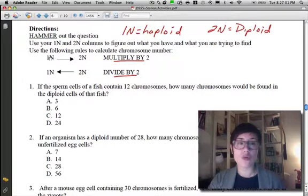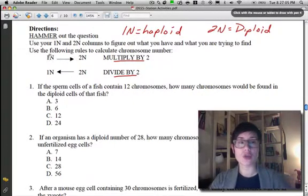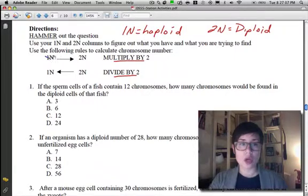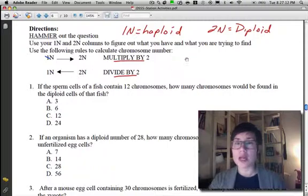So, if you have to go from 1N to 2N, Ms. Hanson told you to simply turn the 1 into an X. When you turn the 1 into an X, it means multiplication, so you're going to multiply by 2.